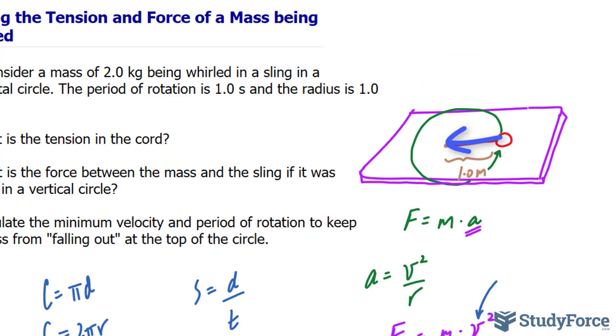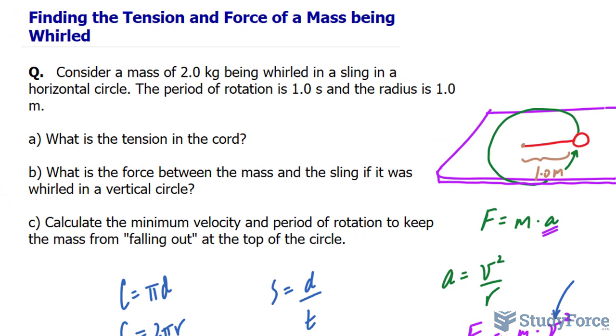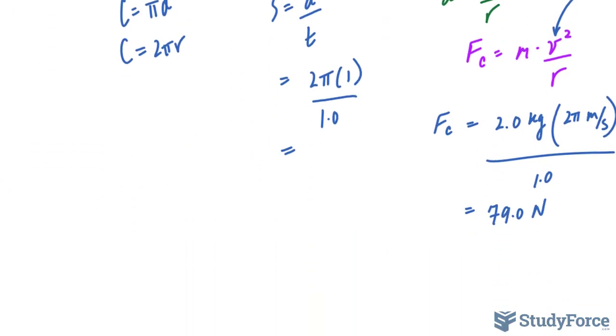Now with that out of the way, let's look at b. What is the force between the mass and the sling if it was whirled in a vertical circle? So rather than in a horizontal circle, it is now going up and down. So here it is, the mass, and it's going around in a circle.